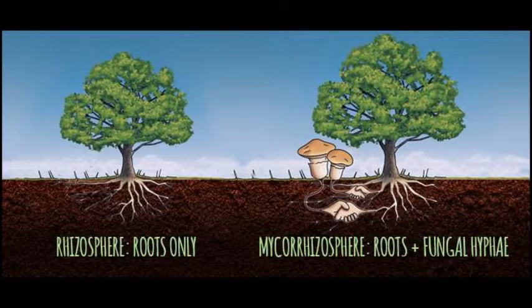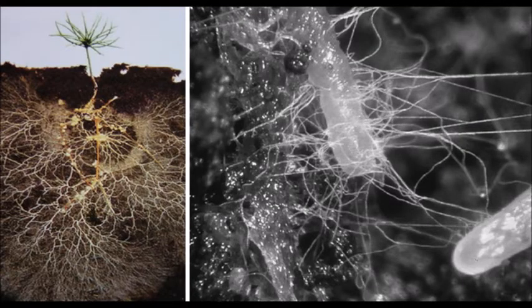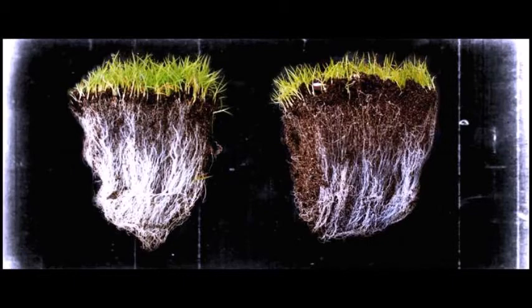However, fungi do immensely aid plants, especially mycorrhizal fungi. Mycorrhizae is an association that fungi make with plant roots, and fungi can live inside or outside the plant roots. The fungi break down soil nutrients for the plant, and this symbiotic relationship is so beneficial to plants that 90% of them have mycorrhizal fungi.